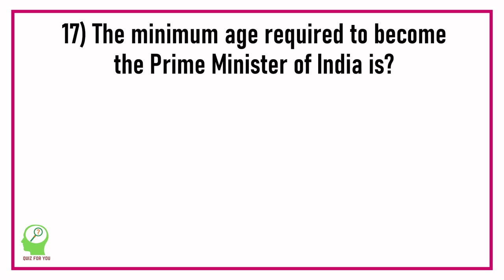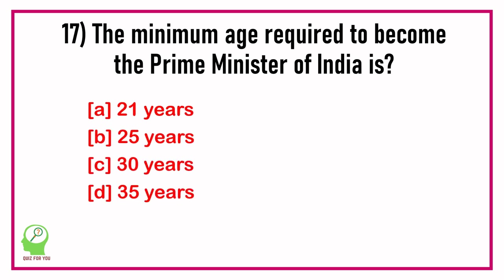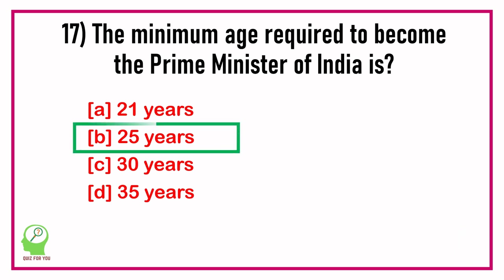Question number seventeen: The minimum age required to become the Prime Minister of India is which of the following? Options are: 21 years, 25 years, 30 years, 35 years. Answer: 25 years.